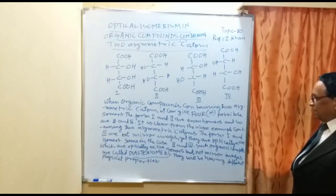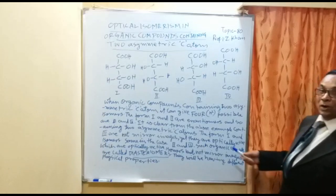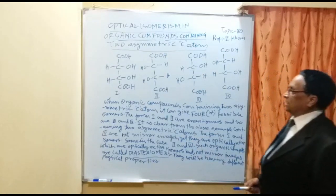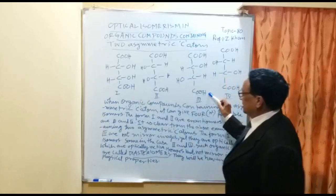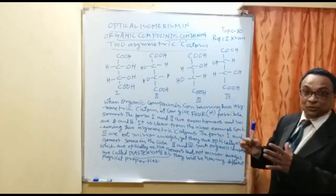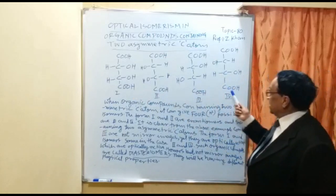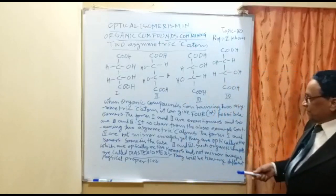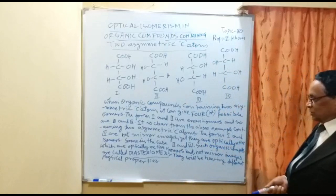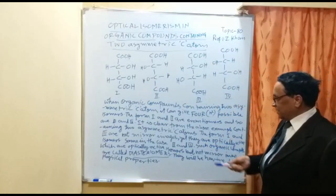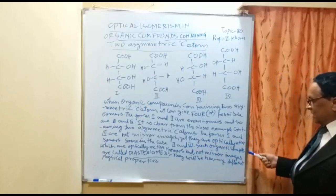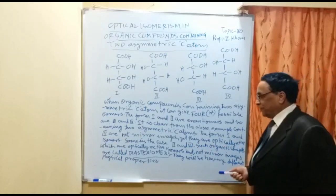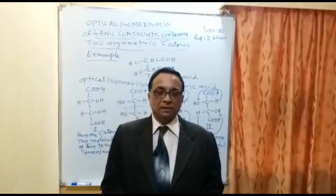Forms one and three are not mirror images of each other — they are diastereomers. Similarly, forms two and four are not mirror images — they are also diastereomers. Such organic compounds that are diastereomers will have different physical properties from one another.